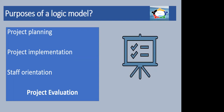They can also be used in project implementation — once you've got all the resources, you might use a logic model to ensure that you've got all the resources, the inputs, the outputs, the activities, and the outcomes all in place. They might be used in staff orientation — so in the example of the youth club, if you are recruiting youth workers, you could use the logic model to orientate the staff to show them where they sit in relation to all the other activities of the youth club. But really what we're looking at is a logic model for project evaluation.